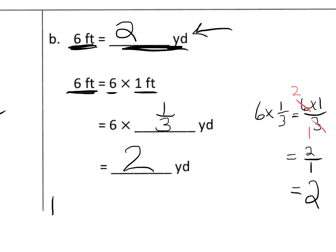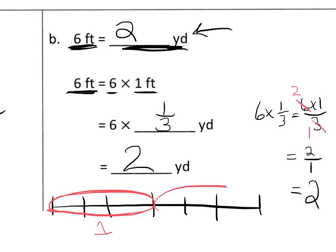Six times one third is equal to two, so the answer is two yards. And sure enough, six feet is equal to two yards, that makes sense, because if you have six feet, we know that if you have three feet, that equals a yard, and then another three feet, and that equals a yard. So that makes sense.